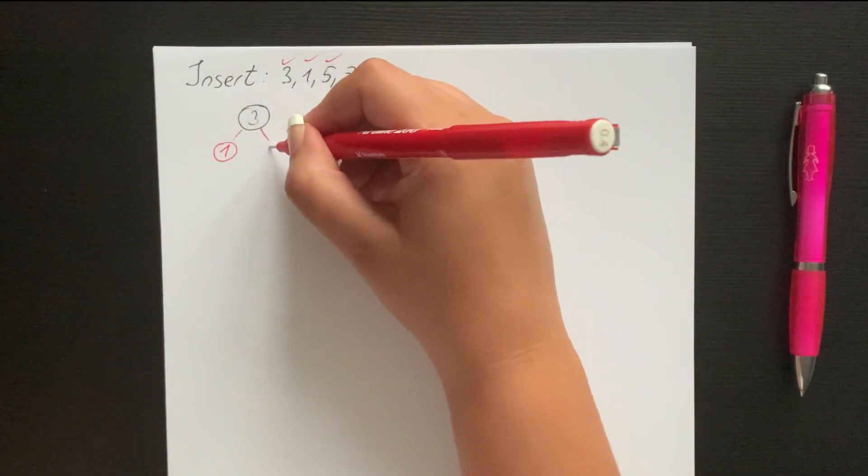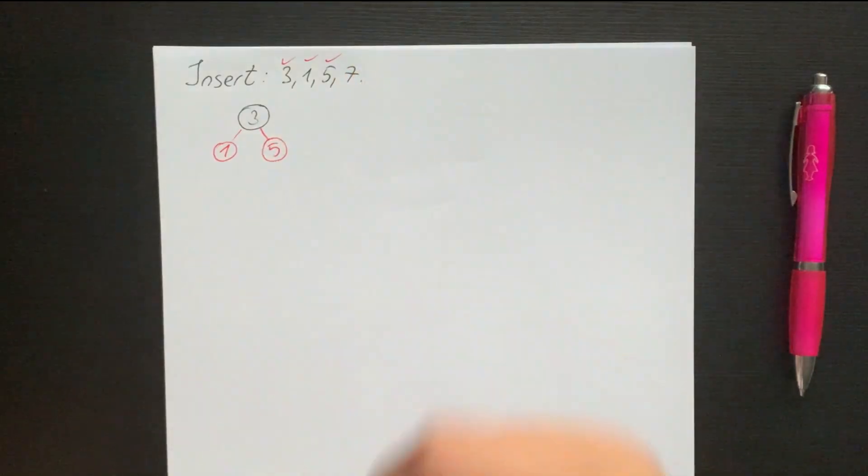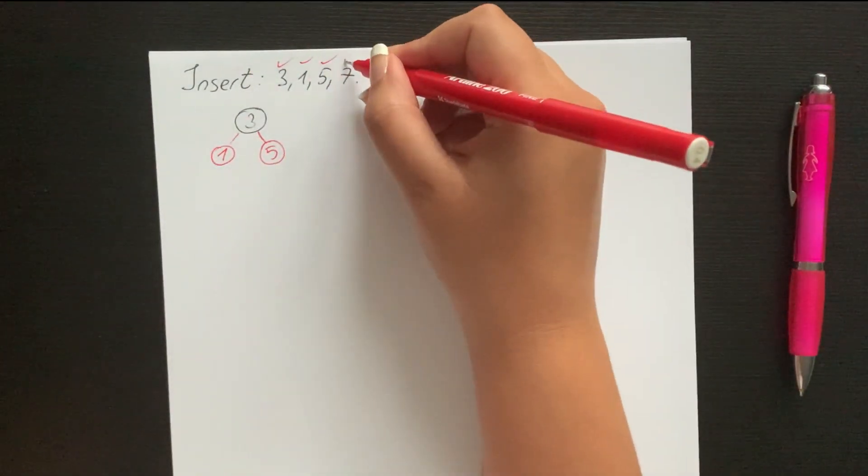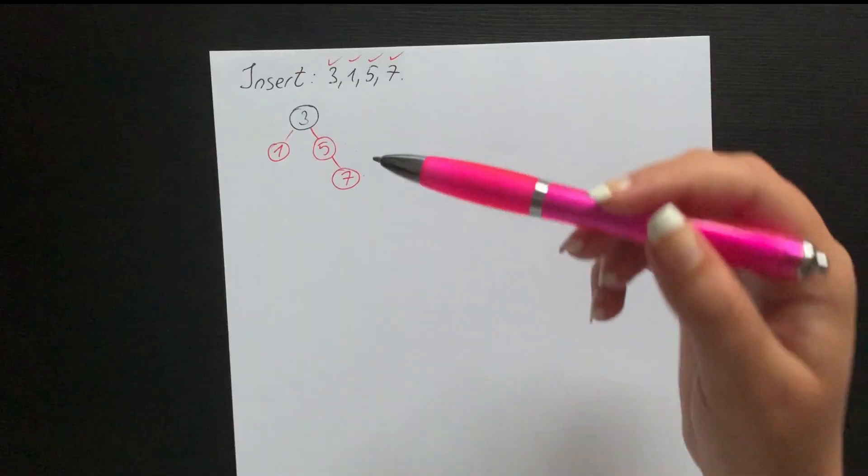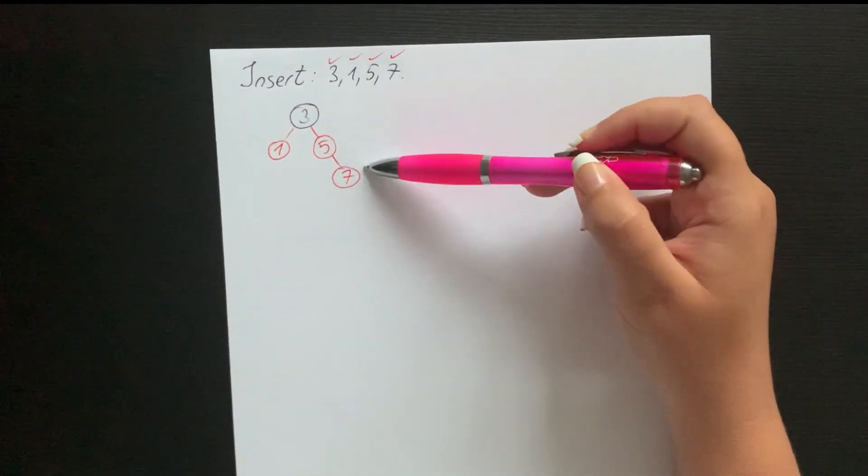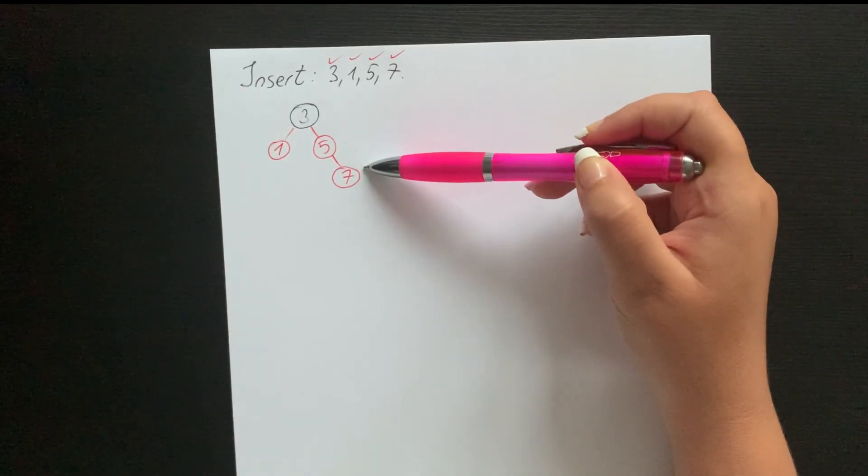There we go. Now we insert one and we color it red according to rule number two. Then we insert five and we also color it red. At the end we insert seven and we also color this one red.